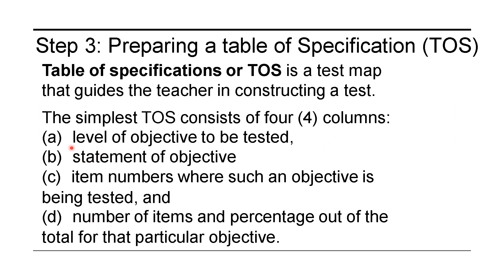The first column is the level of objective to be tested. The second is the statement of objective. The third is the item numbers where such an objective is being tested. And the fourth is the number of items and percentage out of the total for that particular objective. You will see an example in the next slide.